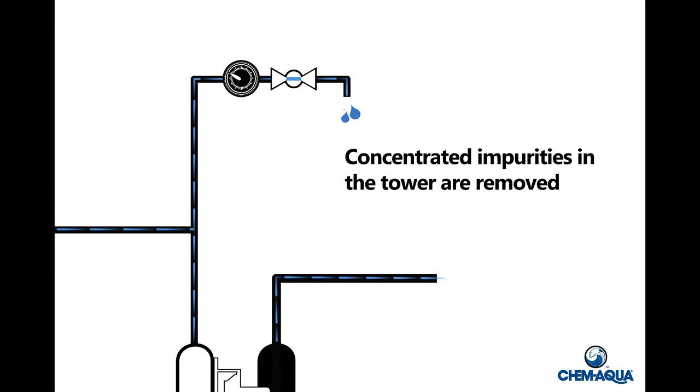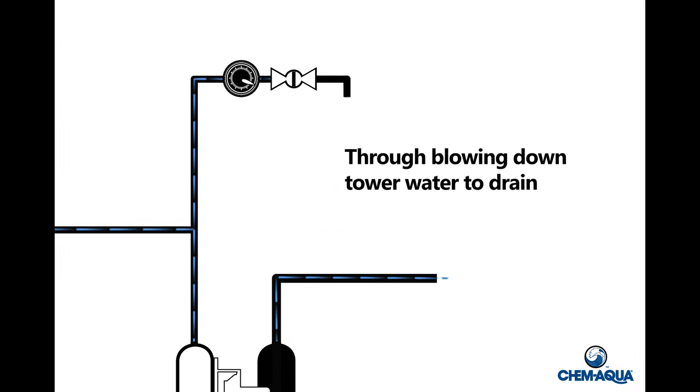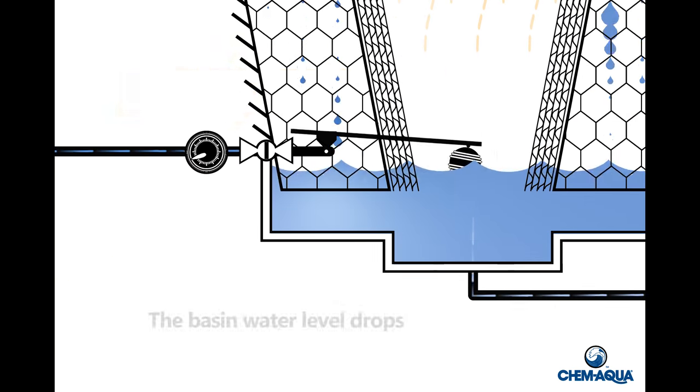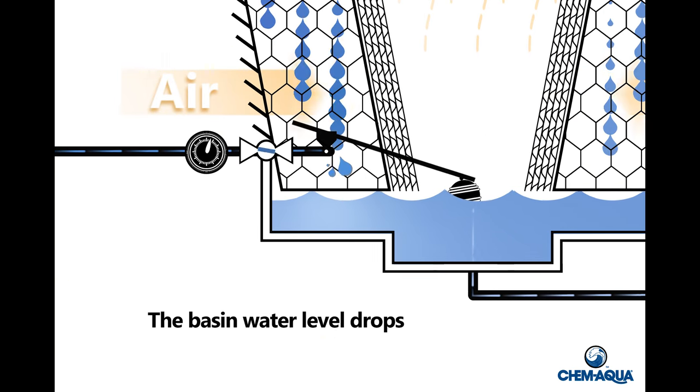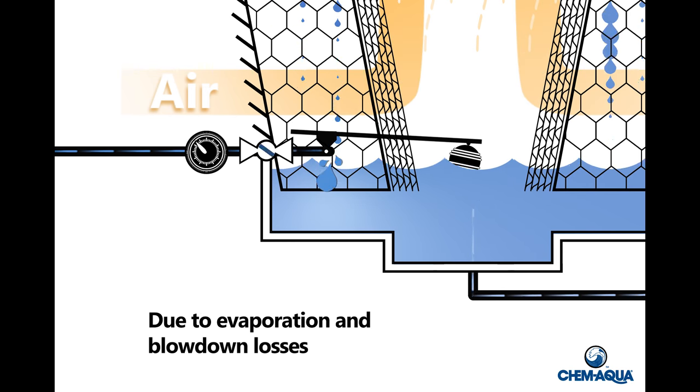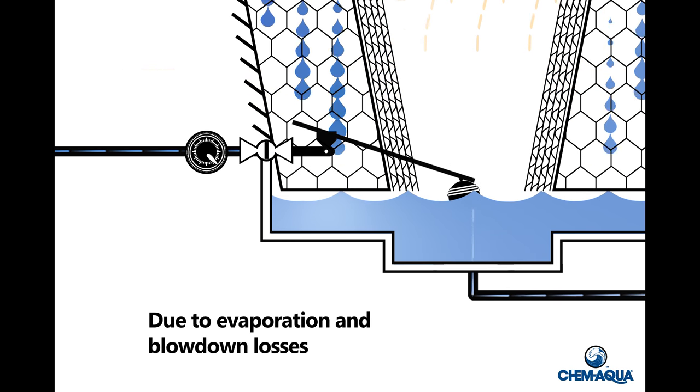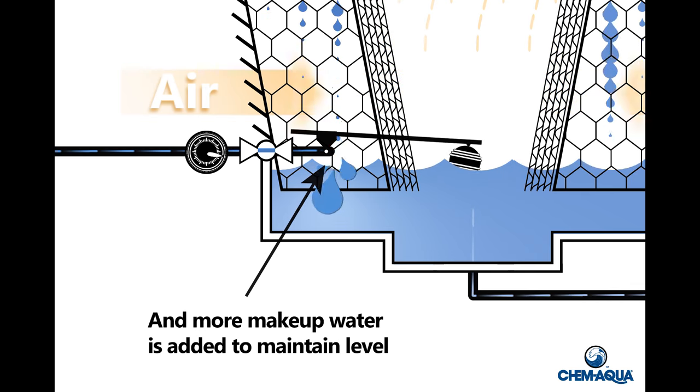Concentrated impurities in the tower are removed through blowing down tower water to the drain. The basin water level drops due to these evaporation and blowdown losses, and more makeup water is added to maintain level.